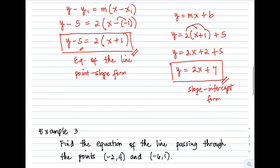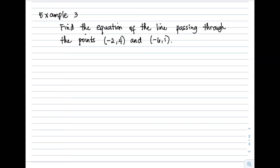Example 3: Find the equation of the line passing through the points (−2, 4) and (−6, 1). We have two given points, so we will use the two-point form: y − y₁ = [(y₂ − y₁)/(x₂ − x₁)](x − x₁).